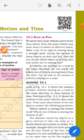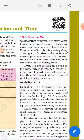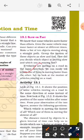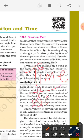So we know that some vehicles move faster than others. Even the same vehicle may move faster or slower at different times. So we have to make sure that time will remain same.